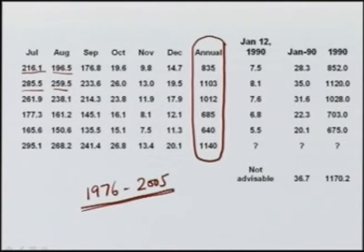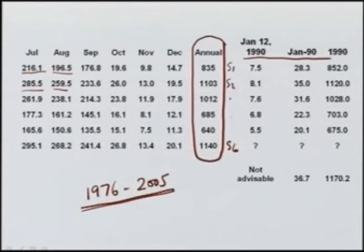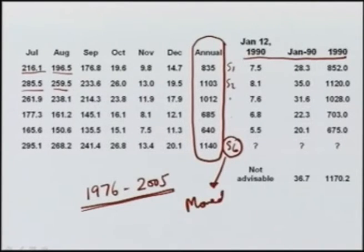Using this 30-year data, we can find out the mean monthly precipitation as well as the mean annual precipitation. This shows us the mean annual precipitation at stations S1 through S6. Now suppose we have some missing data. For example, in this case we have assumed that station S6 was moved in January 1990.